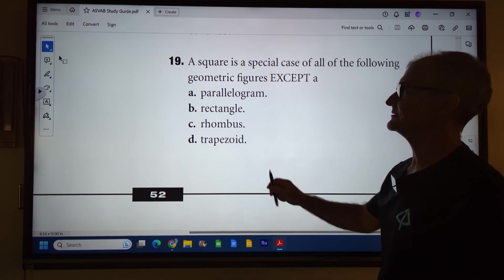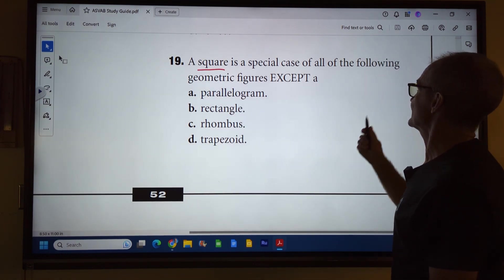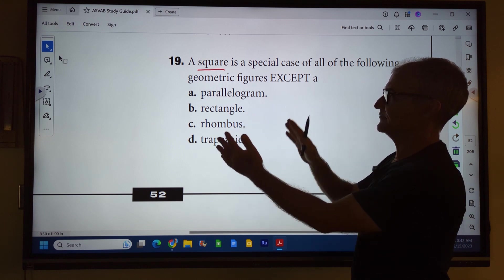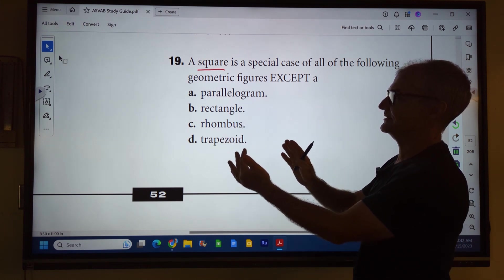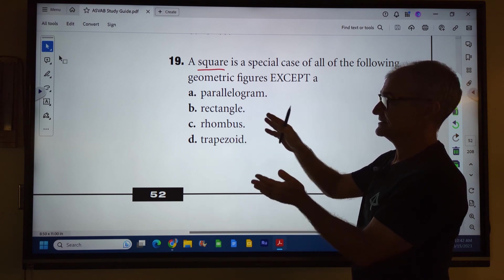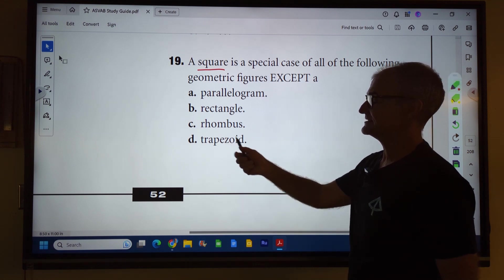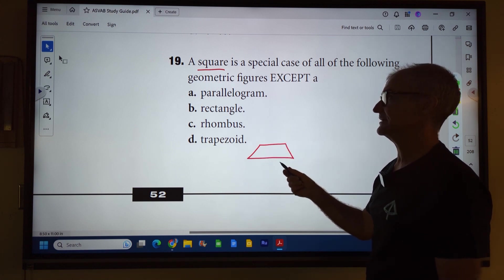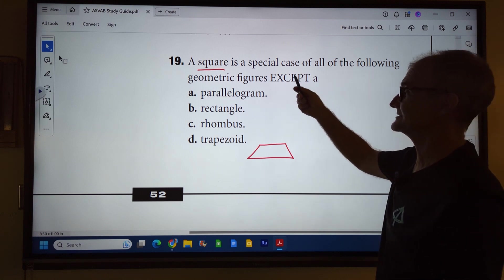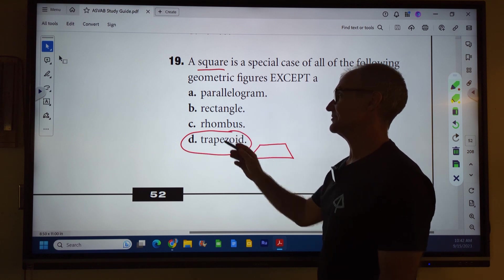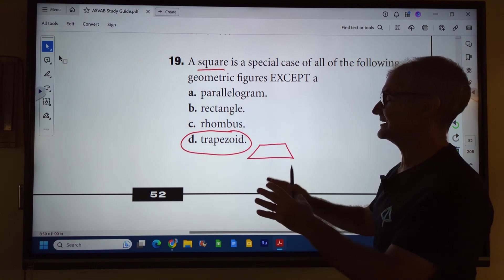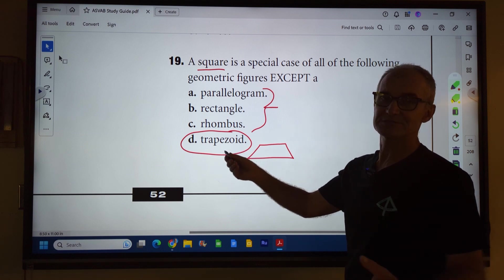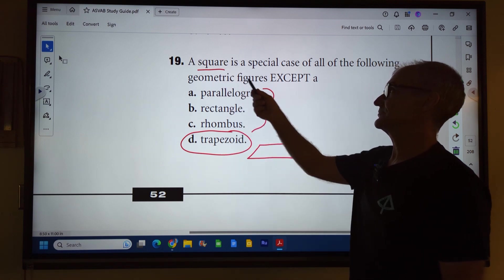Number 19, another vocab question really. A square is a special case of all of the following geometric figures except: parallelogram is two pairs of parallel sides. Rectangle is two pairs of parallel sides. A rhombus is two pair of parallel sides. And by definition, a trapezoid is a set of only one parallel sides and the other two are not parallel. So a square is a special case of all of the following except it's going to have to be a trapezoid.